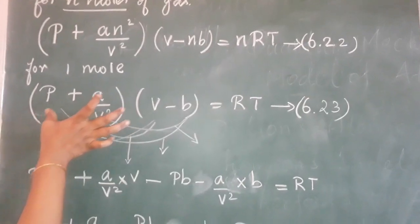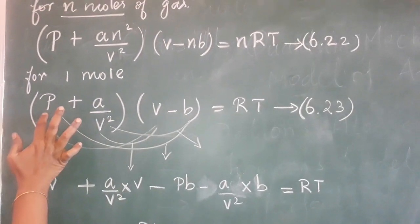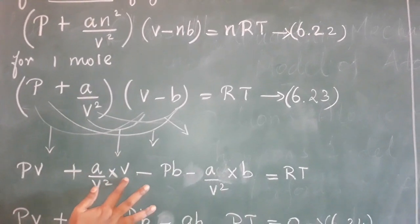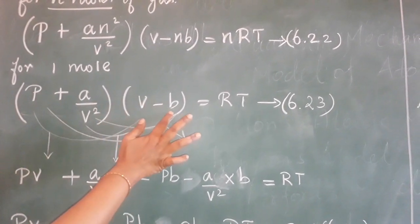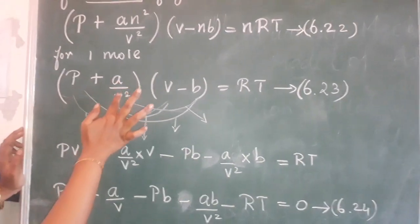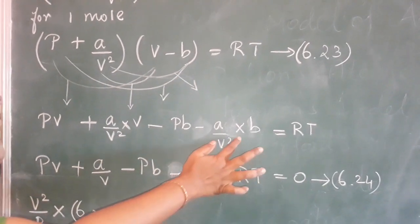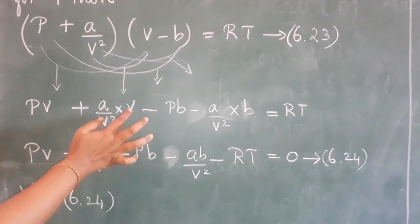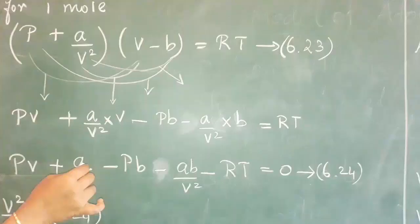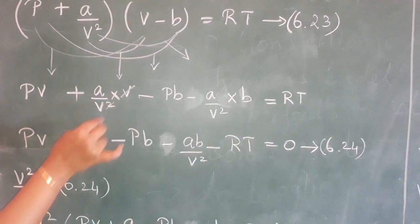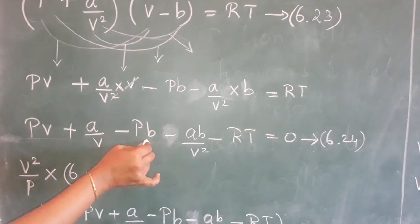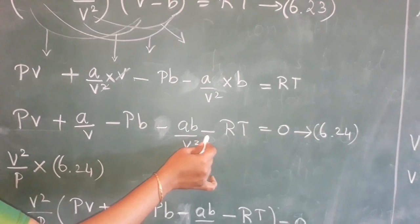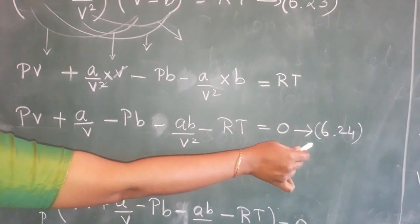Now we multiply each pressure term with each volume term. P × V gives PV; A/V² × V gives A/V; P × (−B) gives −PB; A/V² × (−B) gives −AB/V². After expansion and simplification — PV cancels — we get equation 6.24: PV + A/V − PB − AB/V² − RT = 0.